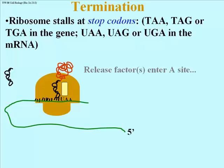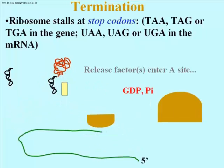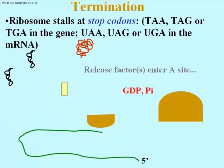That slowdown is just enough time to allow a release factor, a protein, to enter the A site of the ribosome. The result of the attachment of the release factor to the complex in the A site via the UAA is to cause GTP to hydrolyze and the whole complex to come apart, releasing the newly synthesized polypeptide and freeing up the ribosomal subunits, the release factor, the message, and the transfer RNA for further rounds of translation.